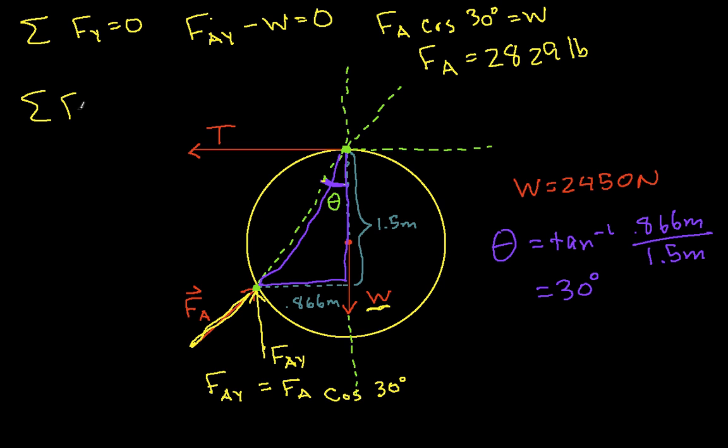Summing the forces in the x direction, negative T because it's going to the left, plus FA sine of 30 degrees equals 0.